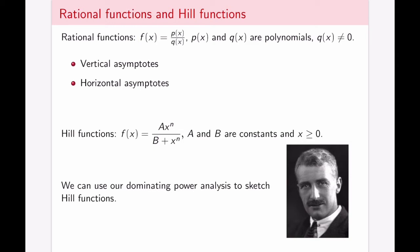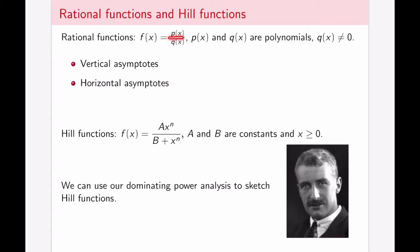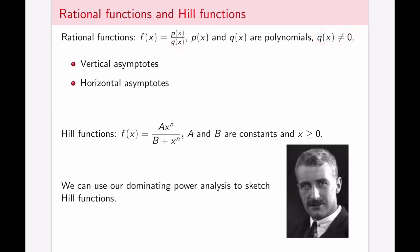In general, rational functions are functions of this form: f of x is a polynomial p of x divided by the polynomial q of x, so a ratio of two polynomial functions. We cannot divide by zero, so the denominator will not be allowed to be zero.